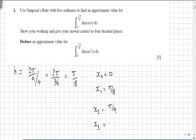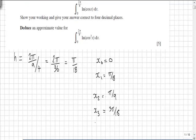x₃ would equal 3π by 18 and finally x₄ would equal 2π by 9, the final ordinate.